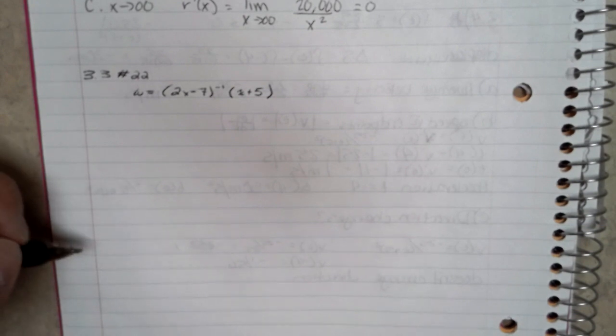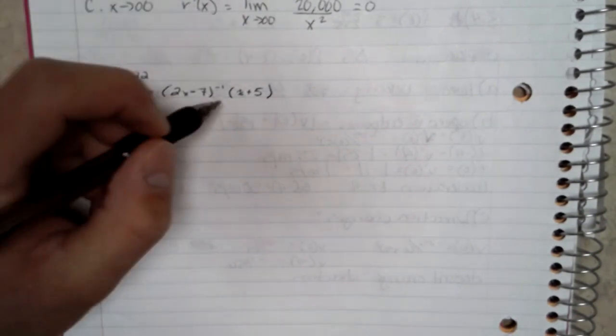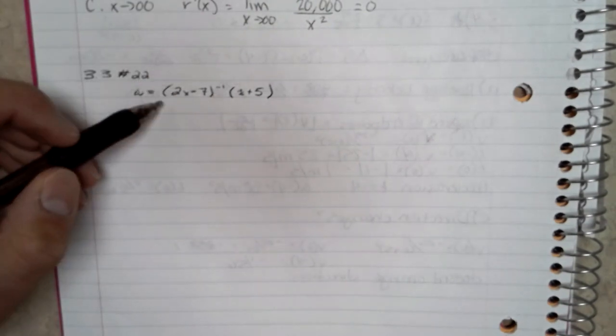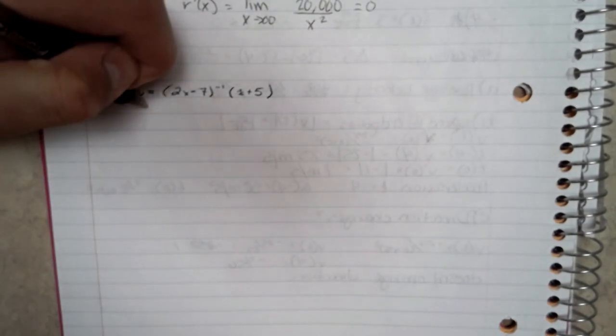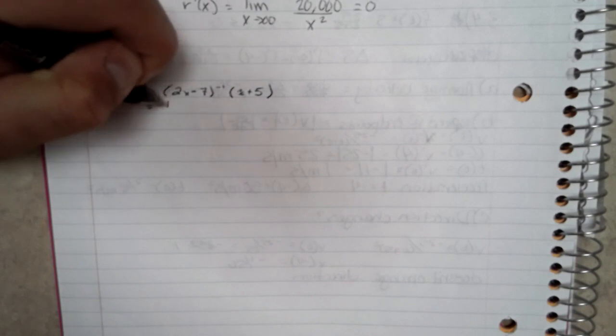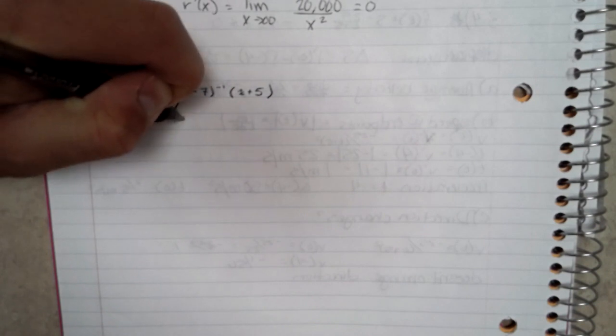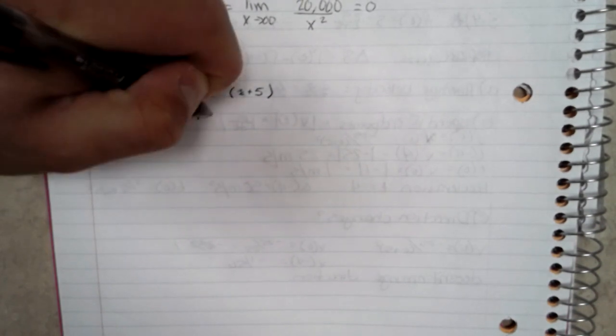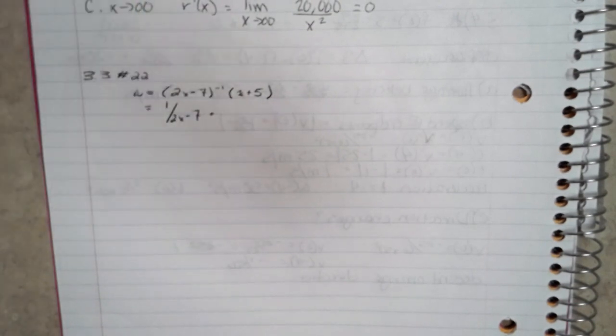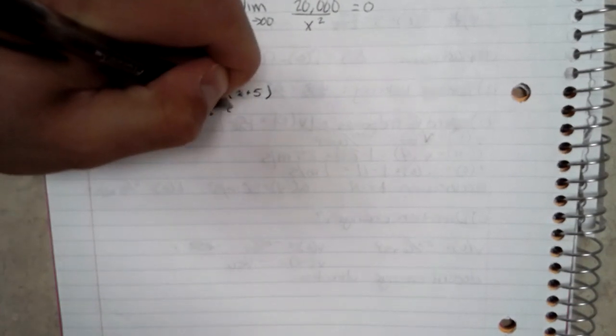So first off, I've converted everything to fraction form since it was negative 1 by the (2x minus 7). So that becomes 1 over (2x minus 7), and I converted (x plus 5) to a fraction, which is (x plus 5) over 1.